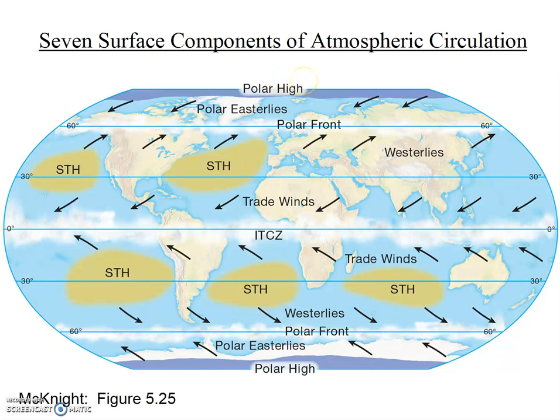The polar high is present over both the north and the south pole, but it's more consistent over Antarctica than over the Arctic because the land, Antarctica, cools off faster and to a greater extent than the mainly oceanic region of the Arctic.